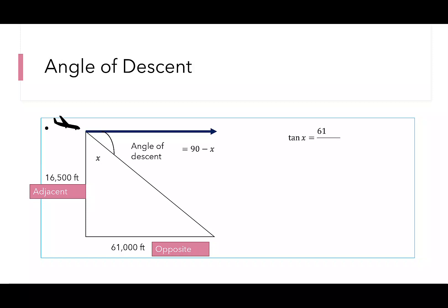Tangent of x is going to be 61,000 over 16,500. To solve for x, I use tan inverse. Tan inverse of x will be 61,000 over 16,500. Plug that into the calculator and it will tell you that our angle x is 74.86 degrees.